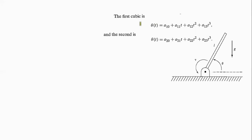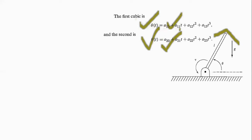In the problem it is stated that we need to use two cubics to define the trajectory. The first cubic is theta(t) = a10 + a11*t + a12*t² + a13*t³, and the second one is written similarly. Using these two cubics you can generate the trajectory.